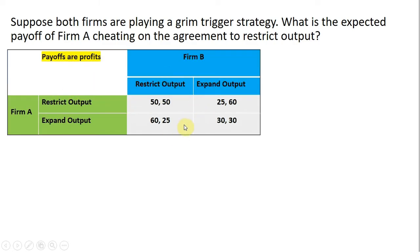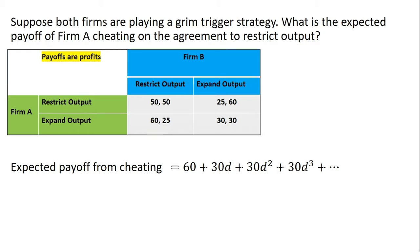Here, again, is the payoff matrix. If firm A were to cheat, that is not restrict output, and decide to cheat from the beginning by expanding output, firm A would get 60. So that's where the 60 is coming from. Firm A is deviating from the agreement.